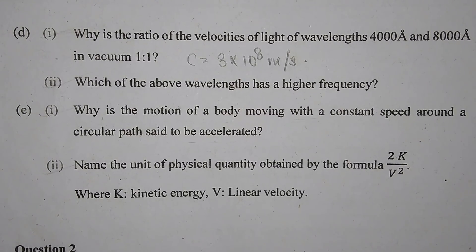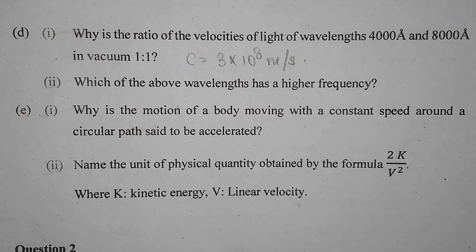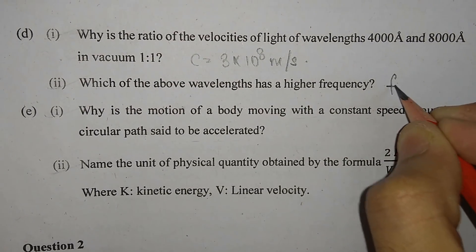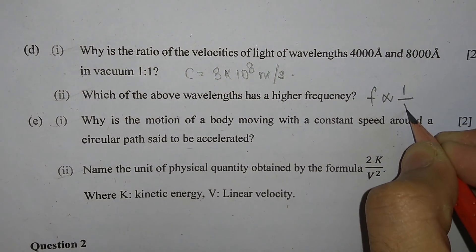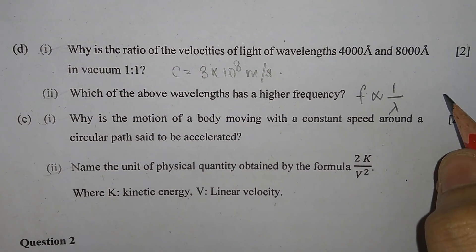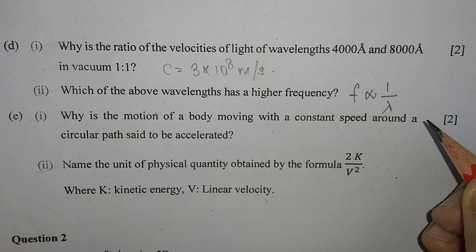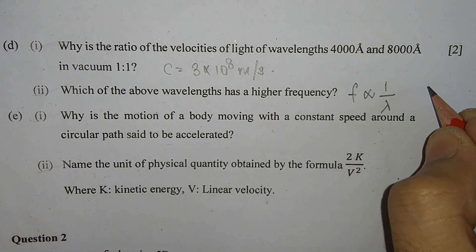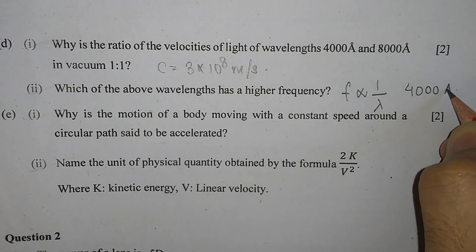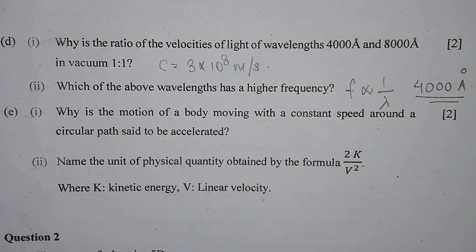Which of the above wavelengths has a higher frequency? Frequency is inversely proportional to wavelength. So the lesser wavelength will have the higher frequency. Therefore, the light of wavelength 4000 Angstrom will have a higher frequency.